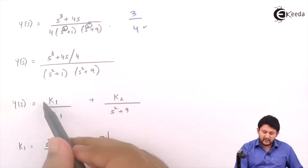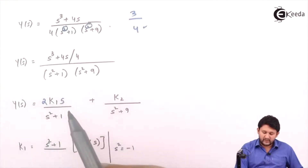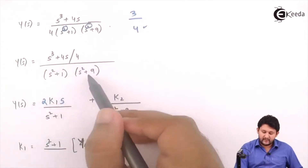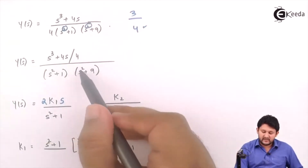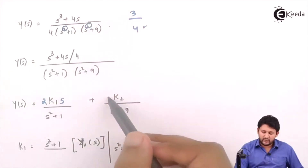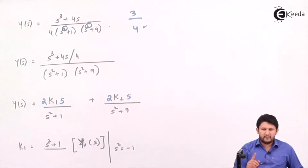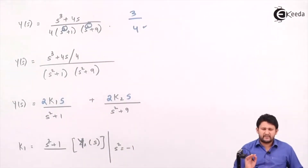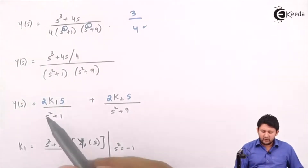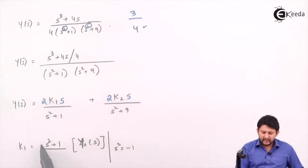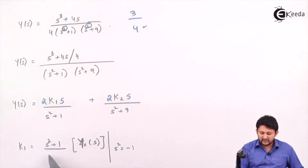Apply k1 — since the power is 2, you need to multiply by 2s. For power 1, you don't need to multiply by any term; only the constant term will be there. Now let's find the value for k1. The denominator is s² + 1, multiplied by 2s, and you have the coefficient shift.